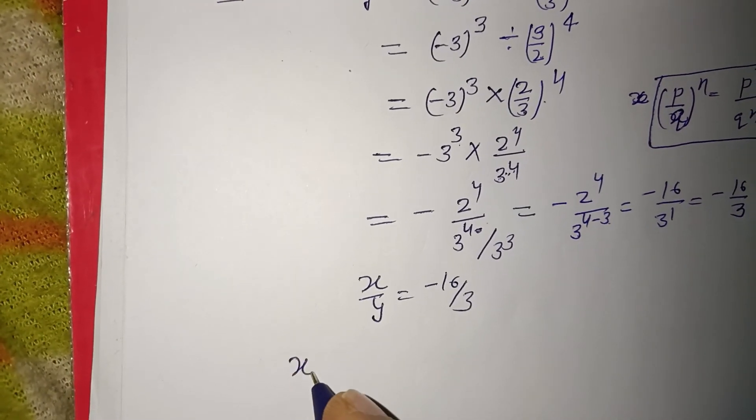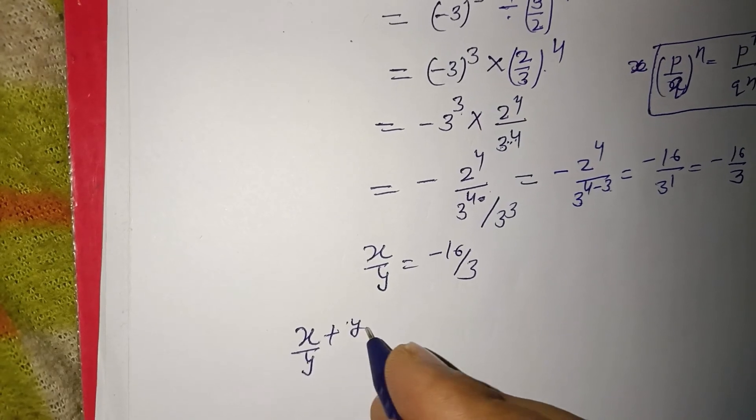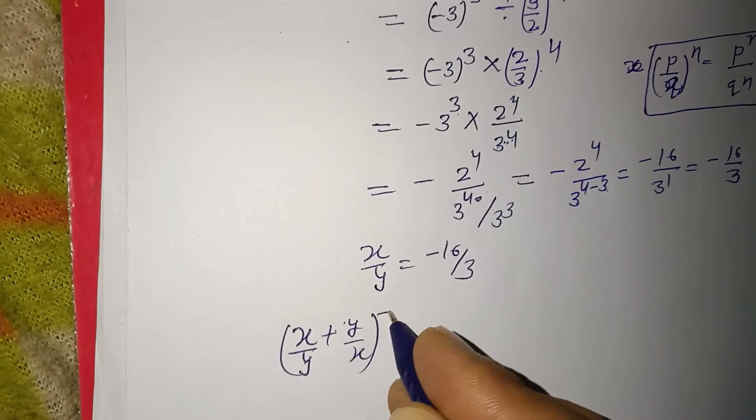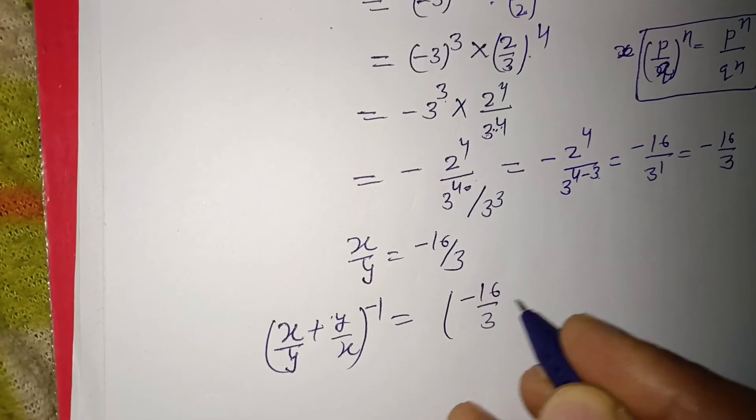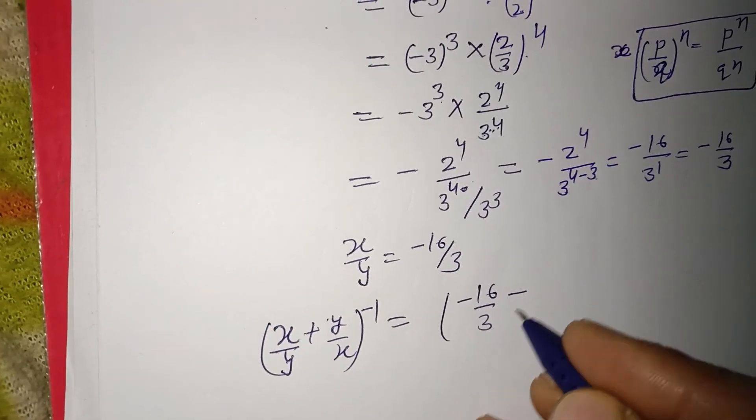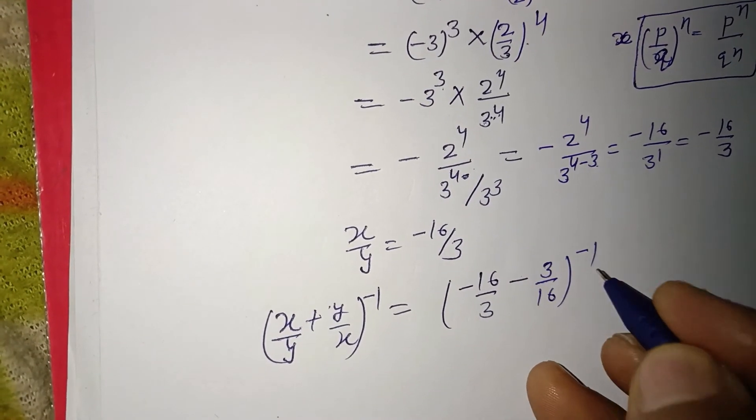Now (x/y + y/x)^(-1) equal to (x/y is -16/3 and y/x is -3/16)^(-1).